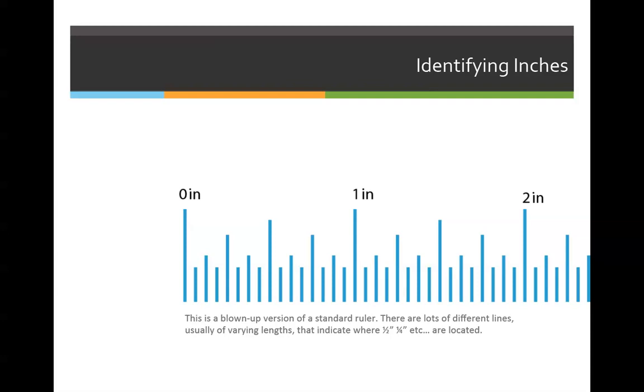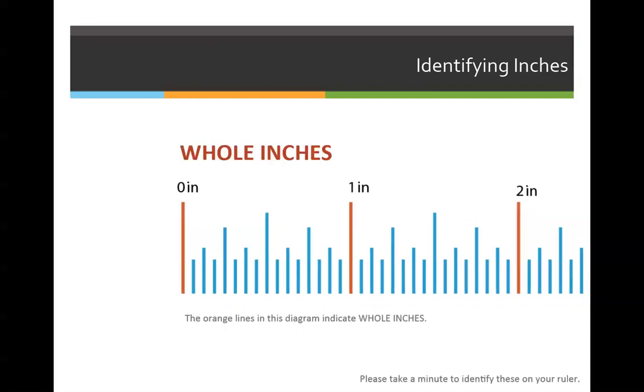This is a blown-up version of a standard ruler. There are lots of different lines, usually of varying lengths, that indicate where a half inch would be, a fourth of an inch, etc., are located. Our objective of this lecture today is going to be able to identify what do they all mean, why are they different heights. Mainly, they're different heights so that you can automatically see from a distance where different things are. So I've highlighted here the whole inch markers. So all the very top lines on an inch ruler indicate a whole inch. One inch, two inch, three inch, four inches. And if everything was even inches, it would be very easy to measure.